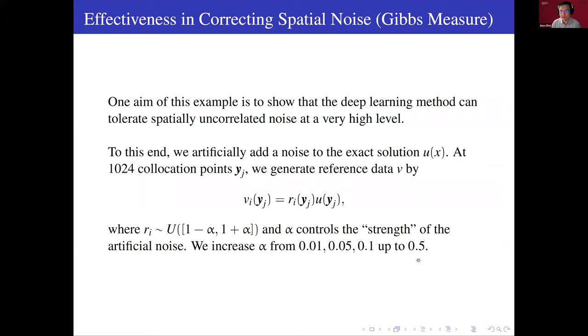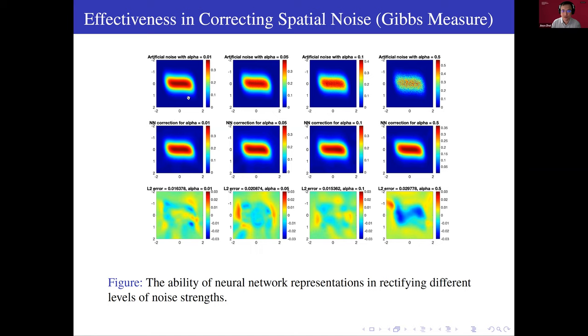That means finally, the noise can be as strong as one half of the true value. So we can see the noise is artificially added to the exact solution. And after we apply the method, we can still get very good approximation, no matter how strong the noise is. And the error in both L2 norm and L infinity norm are controlled within 0.03.